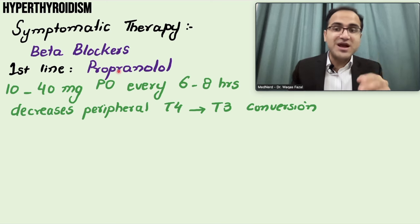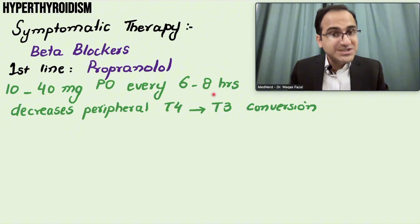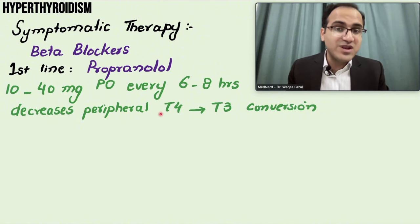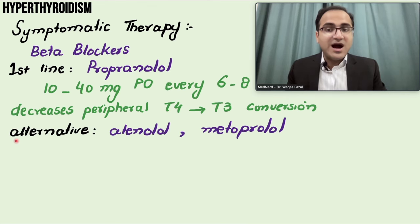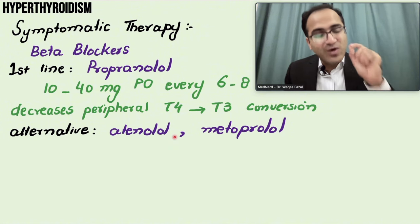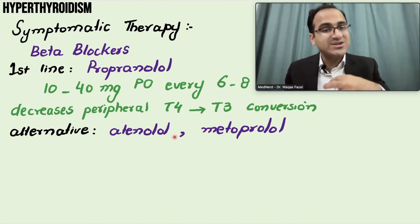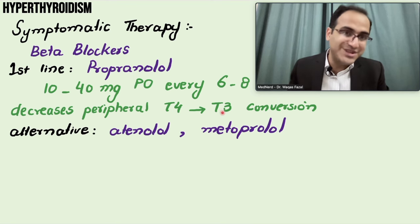Another very important effect of propranolol - which other beta blockers do not have - is that it decreases the peripheral conversion of T4 to T3. T3 is the more active form of thyroid hormone, so blocking this conversion reduces symptoms. Other alternatives include atenolol and metoprolol, but remember these only act on beta-1, affecting the heart without any peripheral action on T4 to T3 conversion.